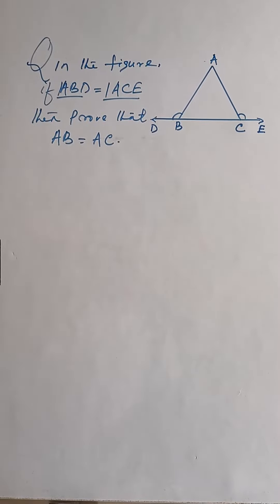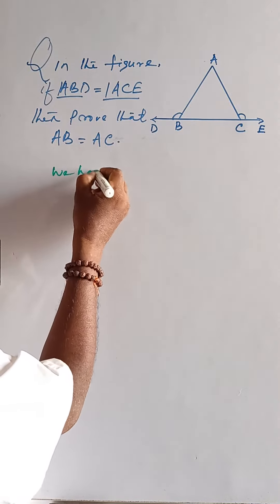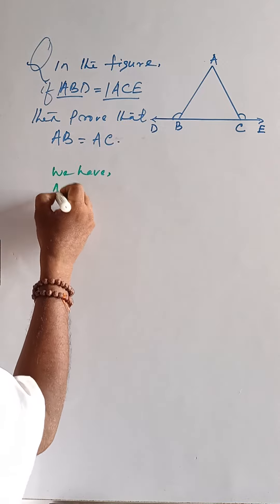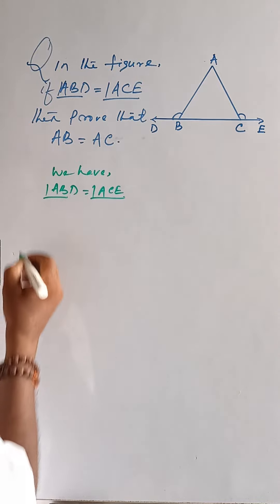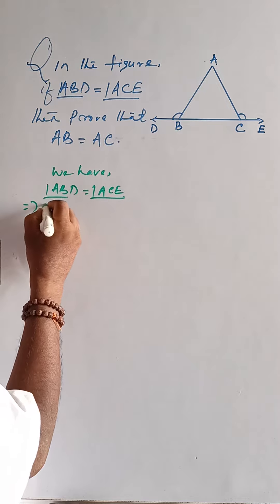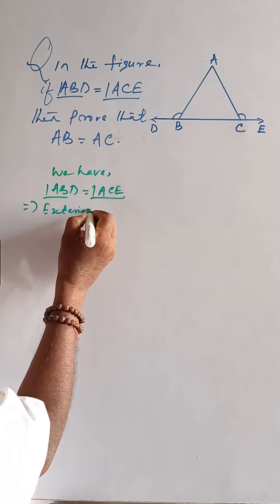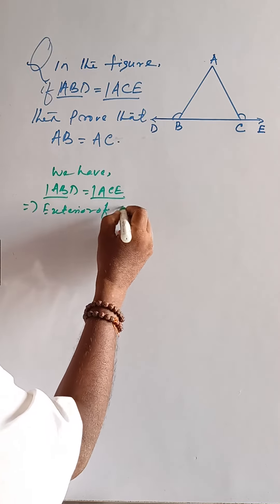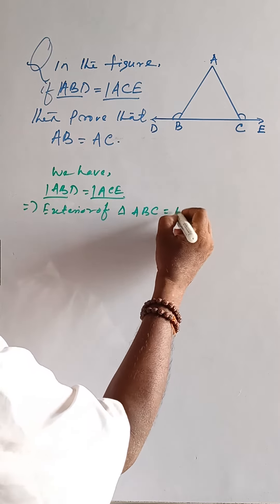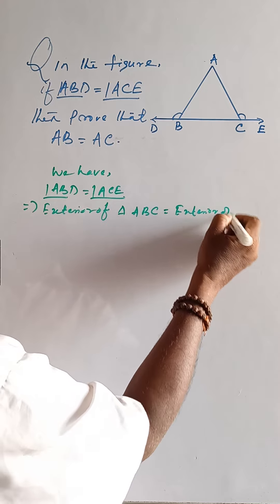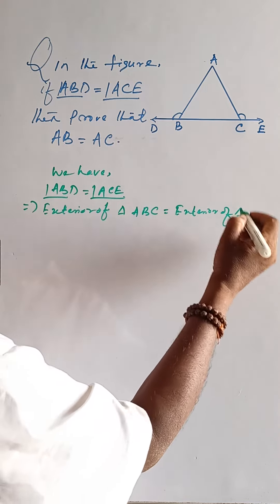In the figure, if angle ABD is equal to angle ACE, then prove that AB is equal to AC. We have angle ABD is equal to angle ACE. These are exterior angles of triangle ABC.